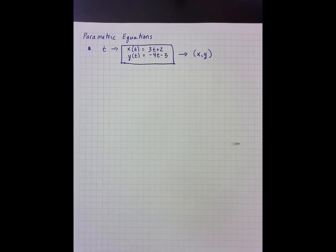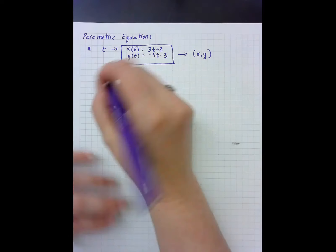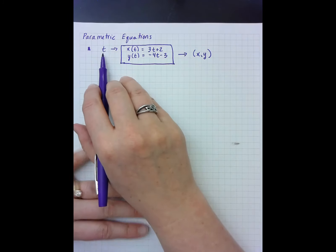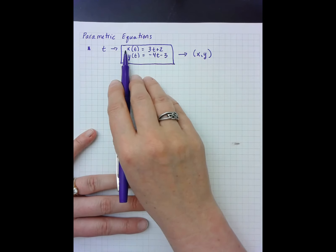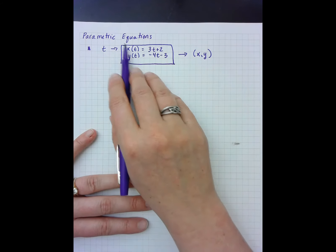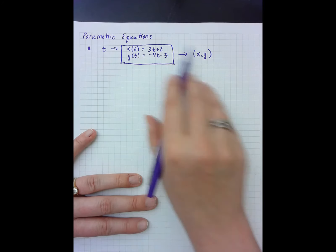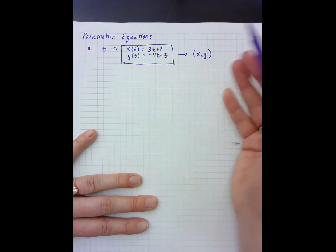These notes are on parametric equations. Parametric equations are kind of neat. What we're doing is we start with a particular t value and we plug that into two separate functions, an x function and a y function, so that a given t value gives us an x and a y, meaning an x and a y coordinate.